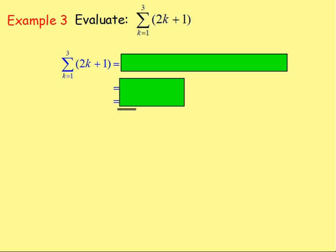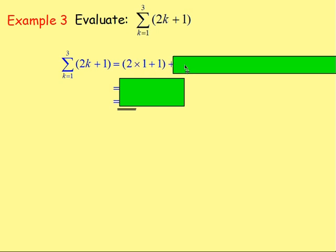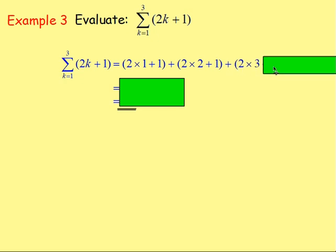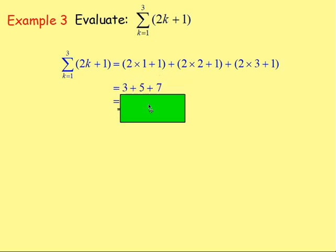Example three: evaluate the sum of 2k + 1 going from k equals one up to three. We sub in one: two times one plus one. Then the next value, two: two times two plus one. Then three: two times three plus one — and we stop there. Working that out: two times one plus one gives you three; two times two plus one is five; two times three plus one is seven. Therefore your answer is 15.